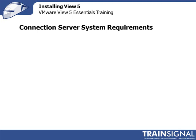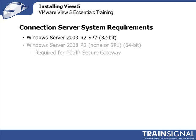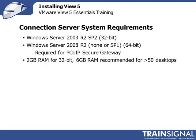Let's take a look at Connection Server system requirements. With the Connection Server, you can run Windows Server 2003 R2 in 32-bit or Windows Server 2008 R2 in 64-bit mode. The 64-bit mode is required for a security server to support the PCoIP secure gateway. For most clients, I usually recommend Windows 2008 R2 as the default operating system.